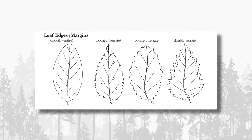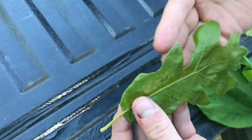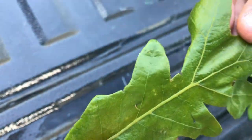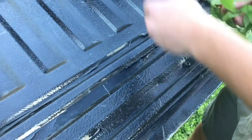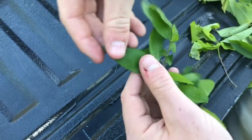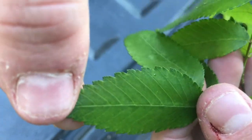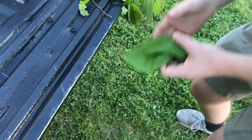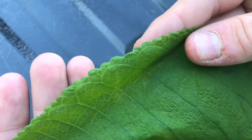Now we're going to talk about leaf edges. The first one we have is smooth — there are no notches on the edge of the leaf. The second one is double serrated — see the double saw blade right there on the inside of the leaf edge. Next is just a single serrated leaf.